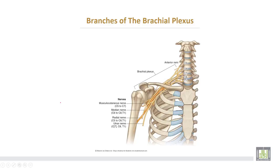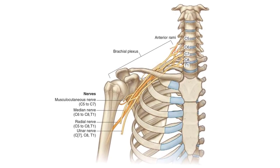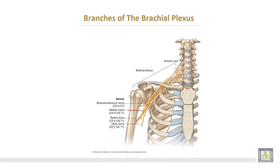This is a summary of the branches of the brachial plexus. The roots and trunks are in the root of the neck, the divisions of the trunks are behind the clavicle, and the cords with their branches lie in the axilla. The terminal nerves include the musculocutaneous nerve, the median nerve, the ulnar nerve, and posteriorly the radial nerve.